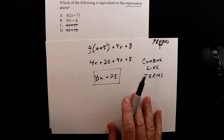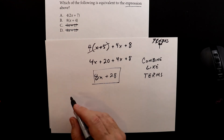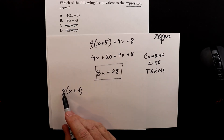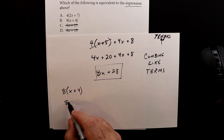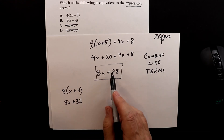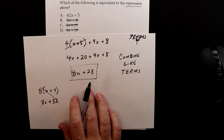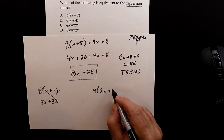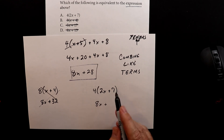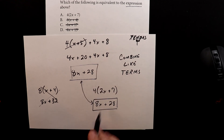Let's look at these two individually, starting with the bottom one. We have 8 times (x plus 4), so we multiply: 8 times x is 8x, and 8 times 4 is positive 32. That gives 8x plus 32, which doesn't match 8x plus 28, so that one gets crossed off. That leaves the other one: 4 times (2x plus 7). So 4 times 2x is 8x, plus 4 times 7 is 28.